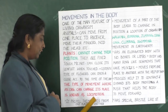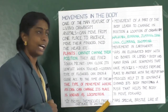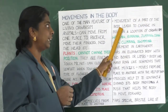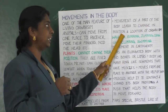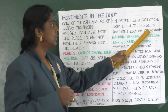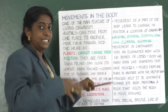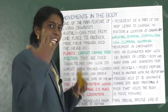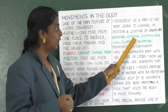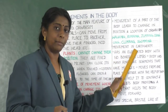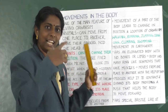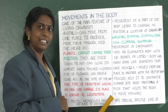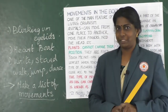Locomotion propels an organism from one place to another. It is the movement of a part of the body which leads to a change in the position and location of the organism. By doing this movement, the entire body's position is changed. For example, by means of walking, running, jumping, crawling, climbing, or swimming, the initial and final position of the body are different.